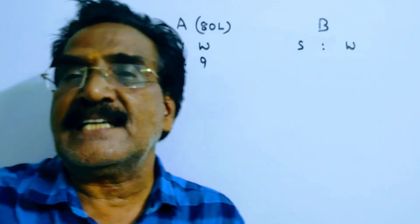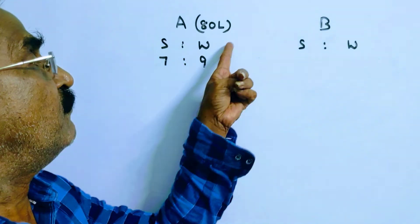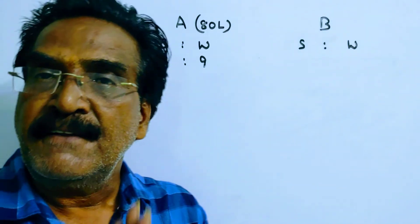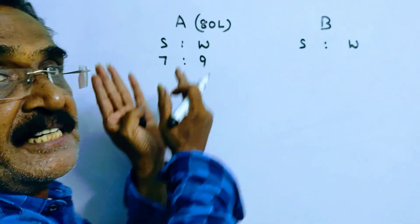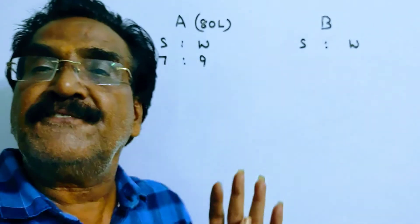80 liters of mixture contains spirit and water in ratio 7:9. Now 20 liters of mixture is transferred to container B.